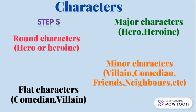Take a look at the characters in step five. Characters may be analyzed as round characters and flat characters. Round characters are basically the hero or the heroine, who keep on developing and changing throughout the story, play, or novel. Flat characters are basically the comedians and the villains who do not change — they remain the same from beginning to end. You may also take a second analysis of major and minor characters. In the major characters you can put the hero and the heroine, and sometimes the villain; or you may classify the villain as a minor character along with the comedians, friends, neighbors, and other characters in the story.